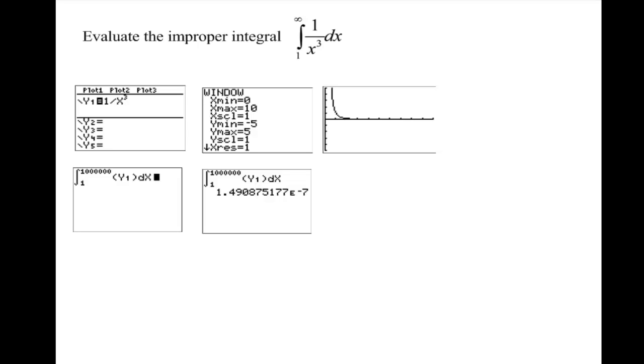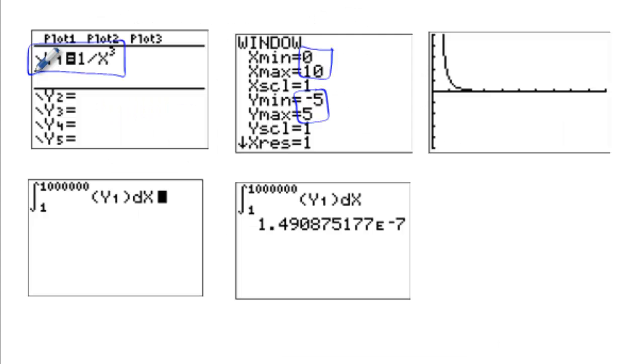So if we were to evaluate this integral from 1 to positive infinity for the function 1 over x cubed dx using our calculator in determining convergence and divergence, we would put that function into y1. You can see that I have set my x values from 0 to 10, my y values from negative 5 to 5. That's how I got the graph.